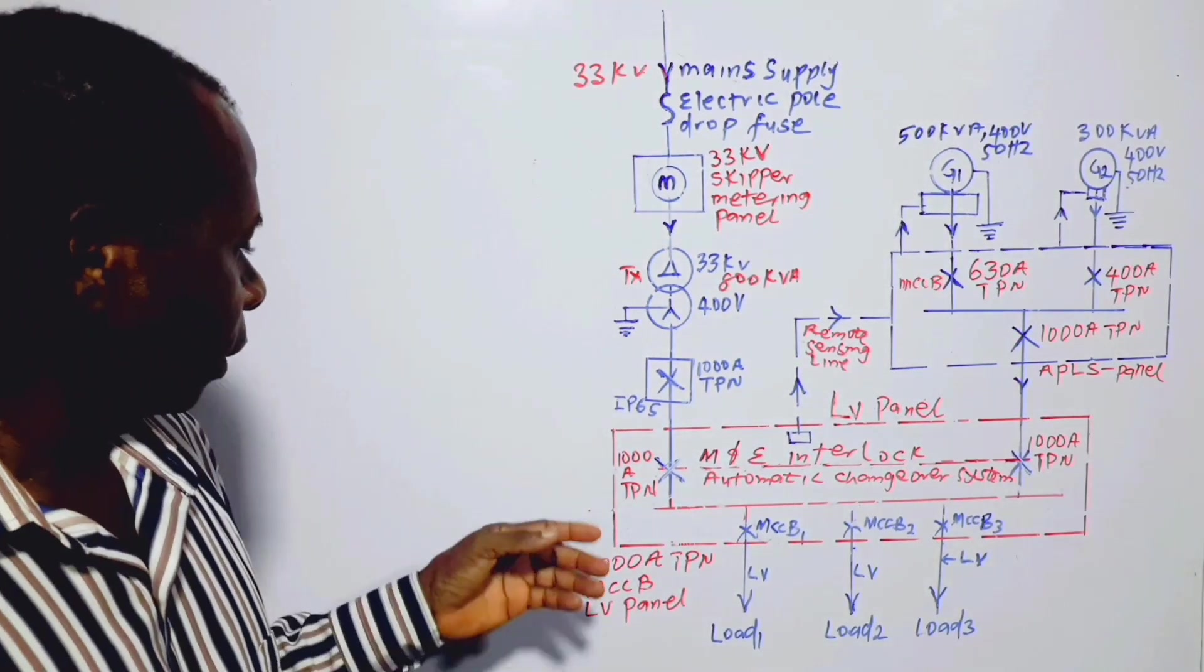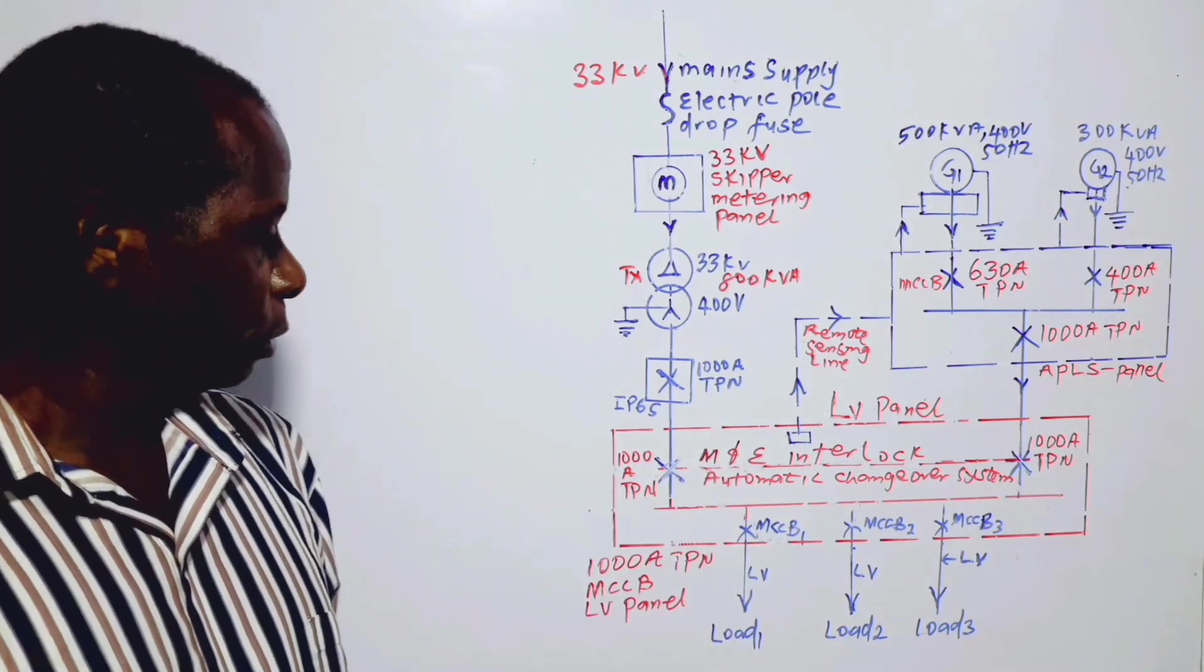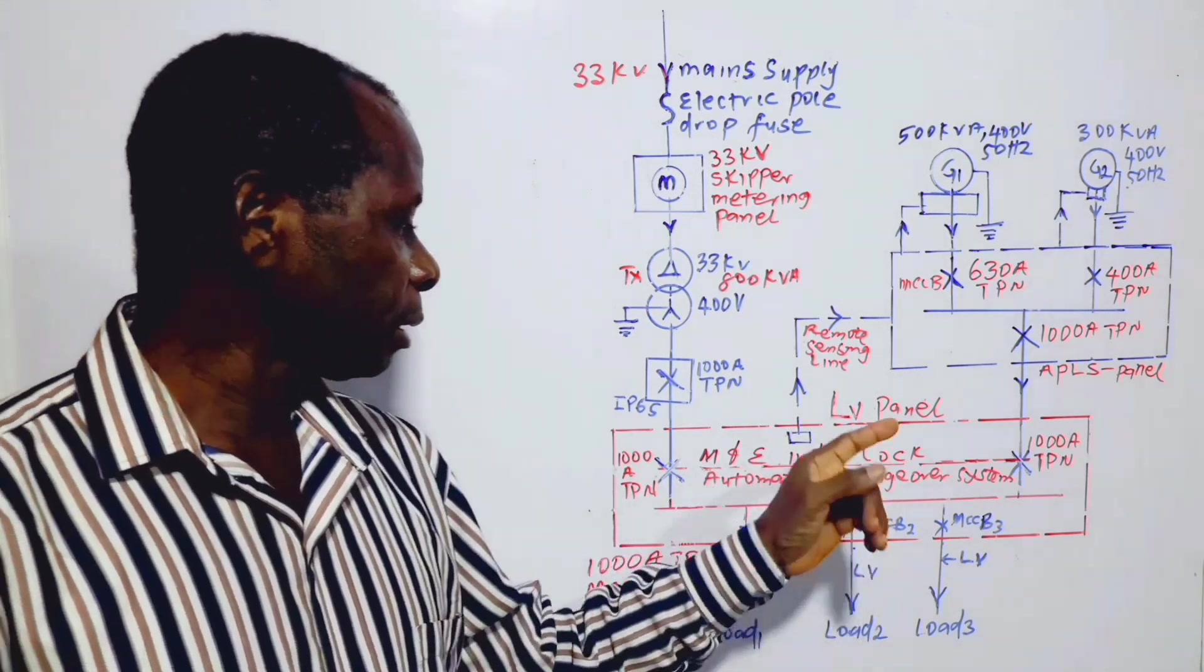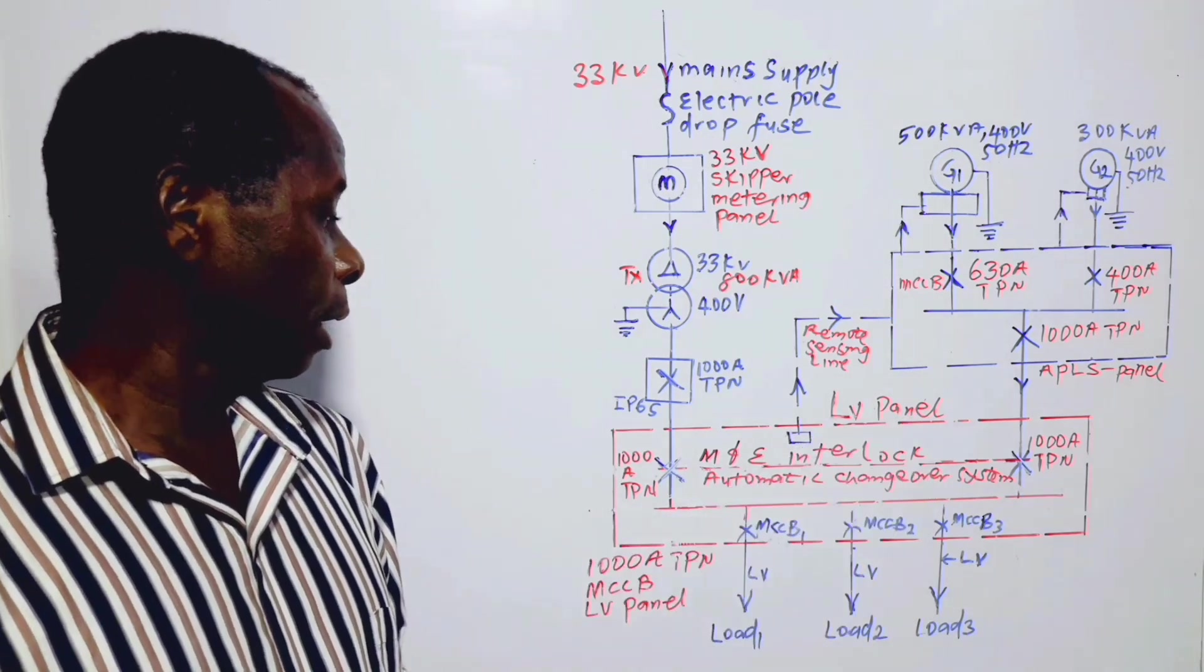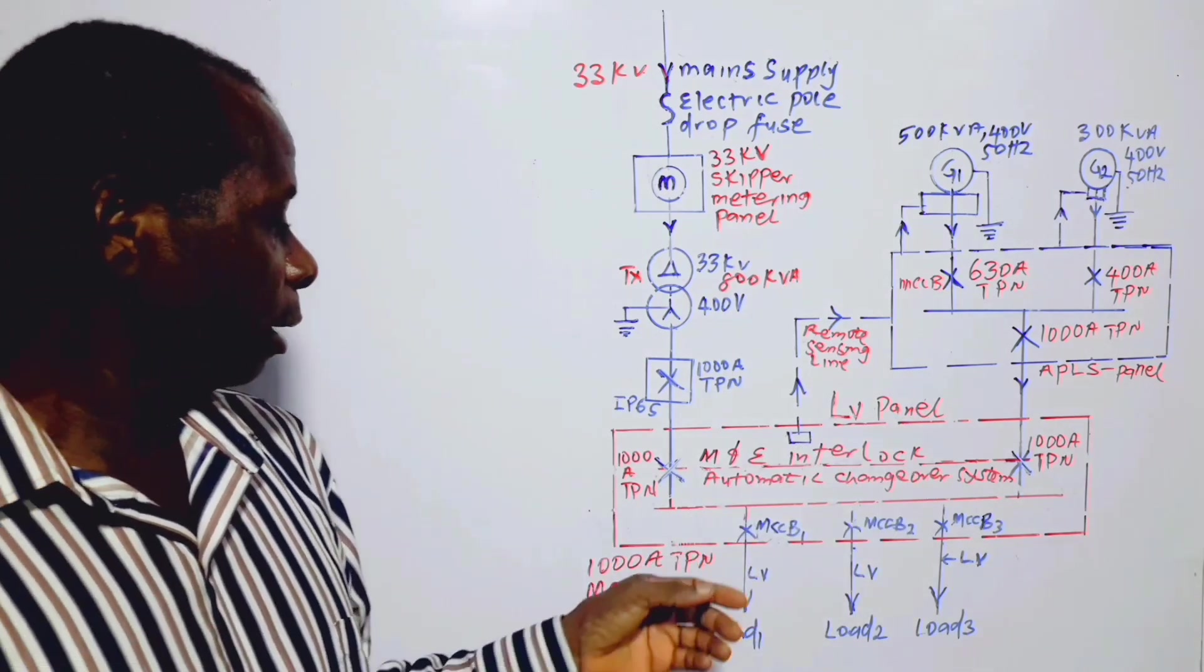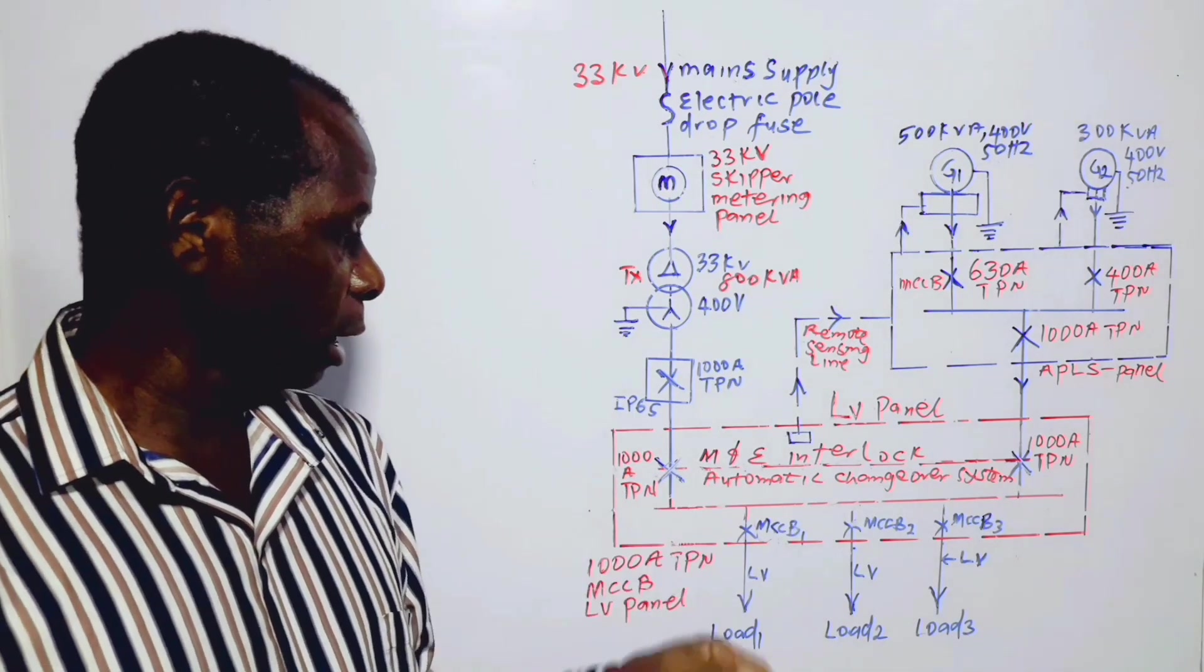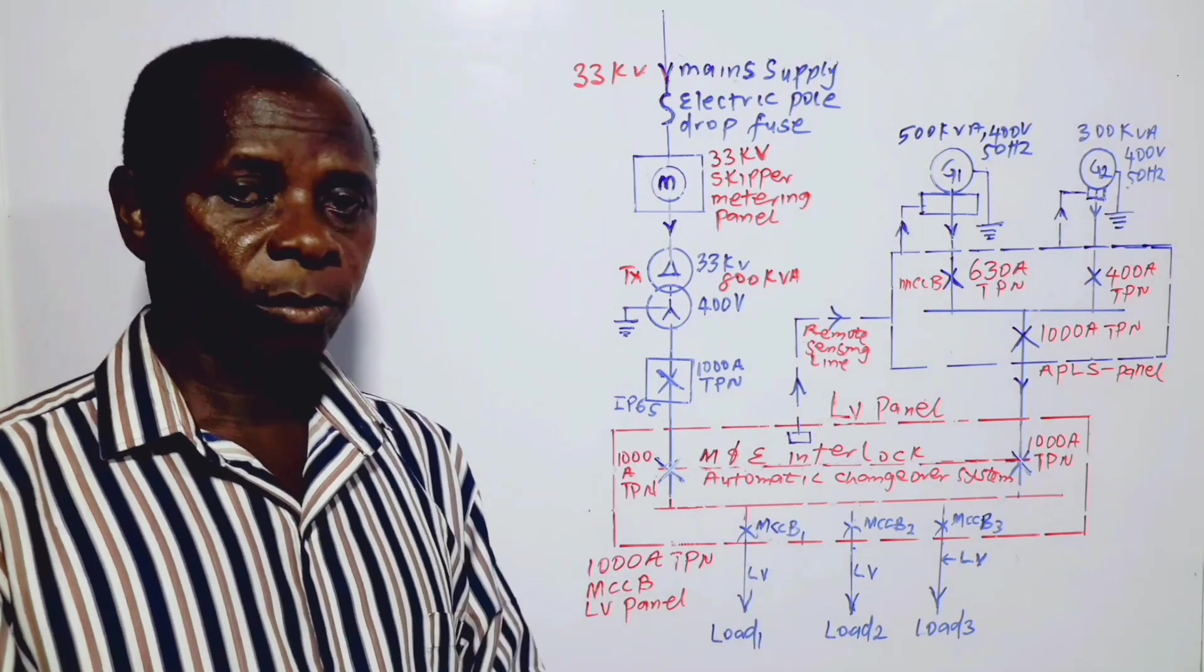Once again, anywhere mechanical interlock appears in this video, it is meant to be MIE interlock or automatic changeover system. MIE interlock means automatic interlock, while mechanical interlock means manual. In this case, we are dealing with automatic, not manual.